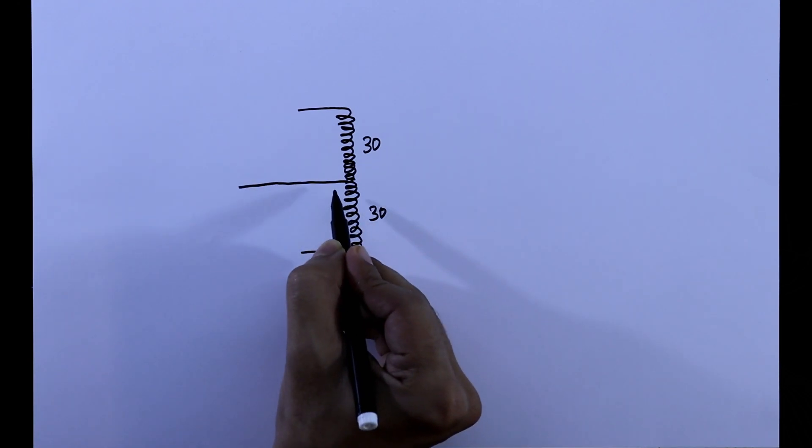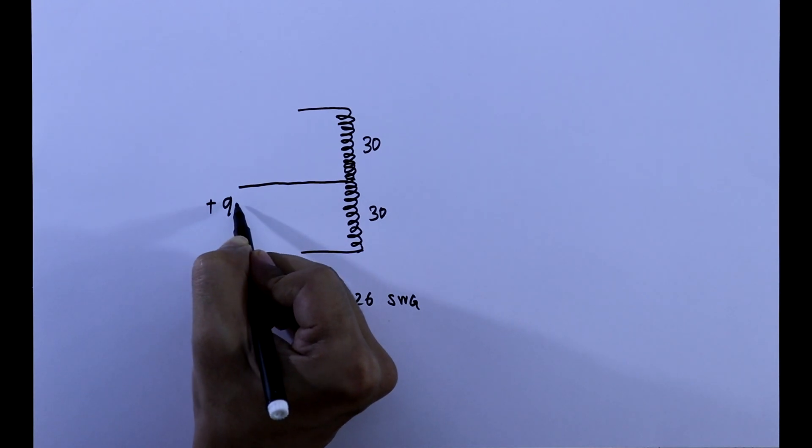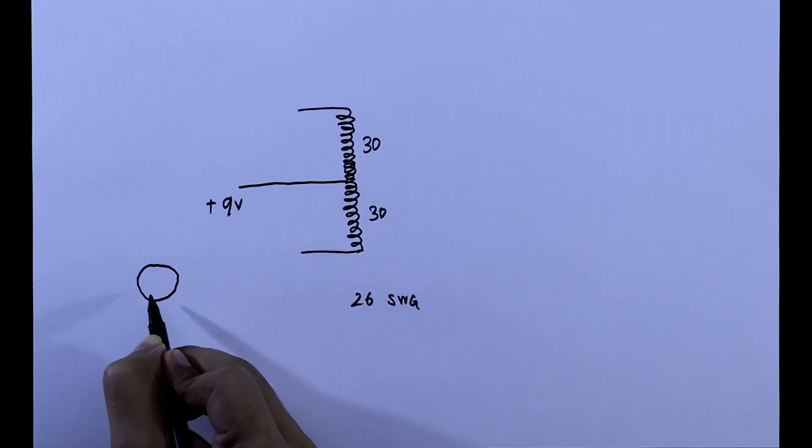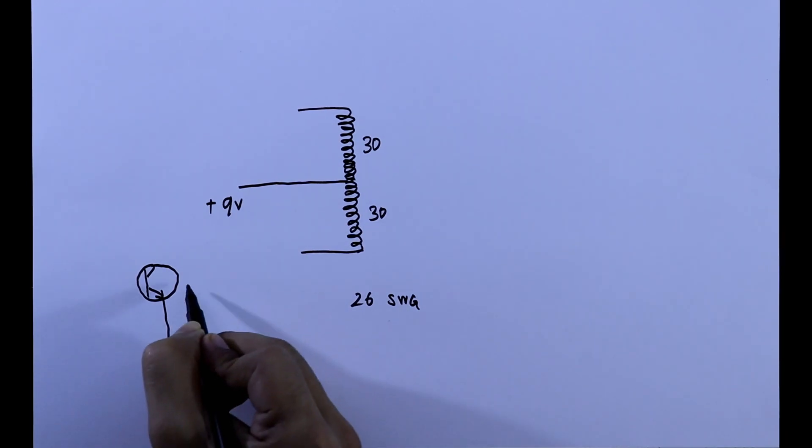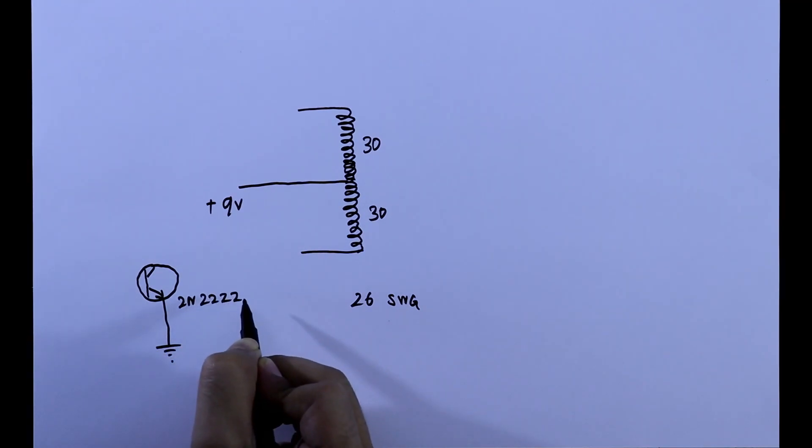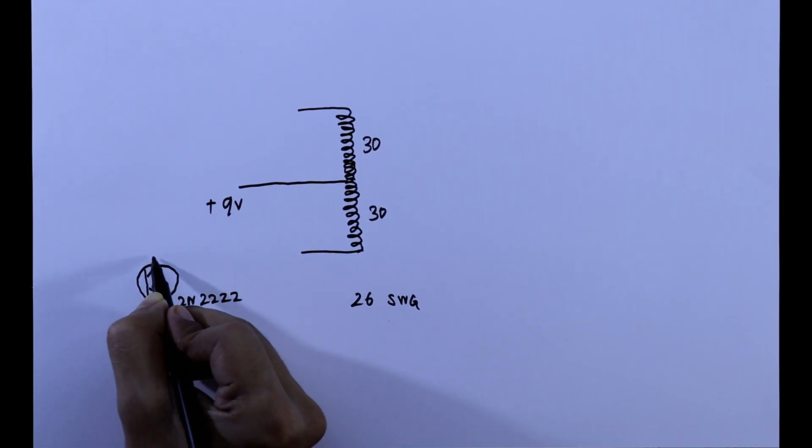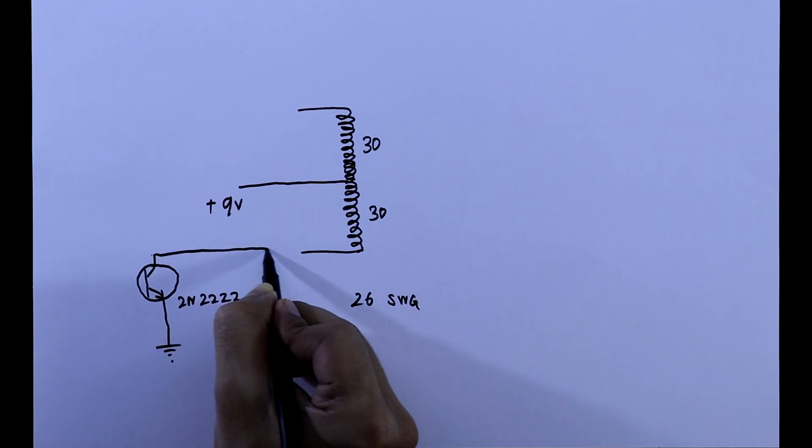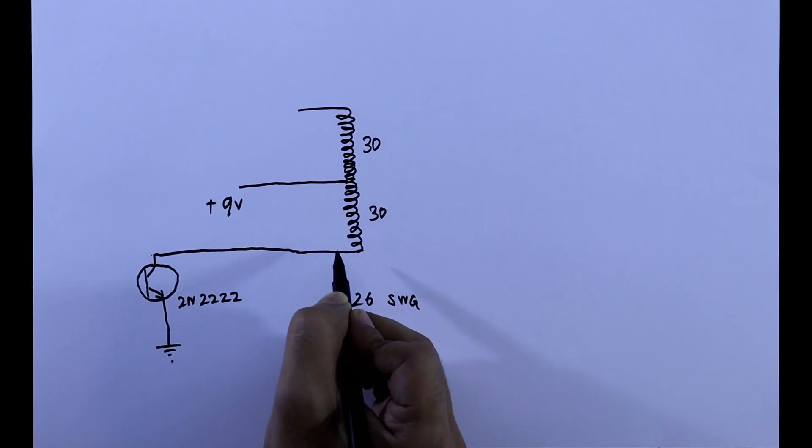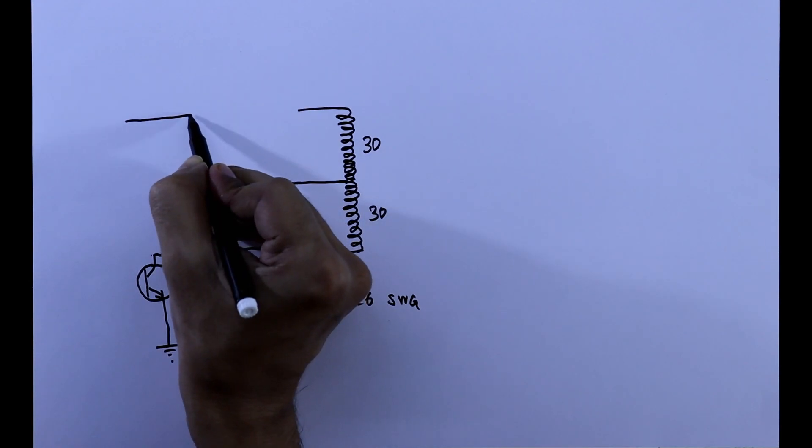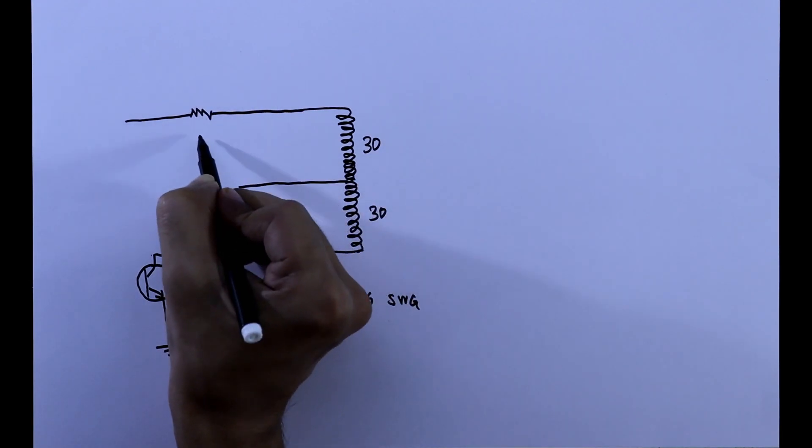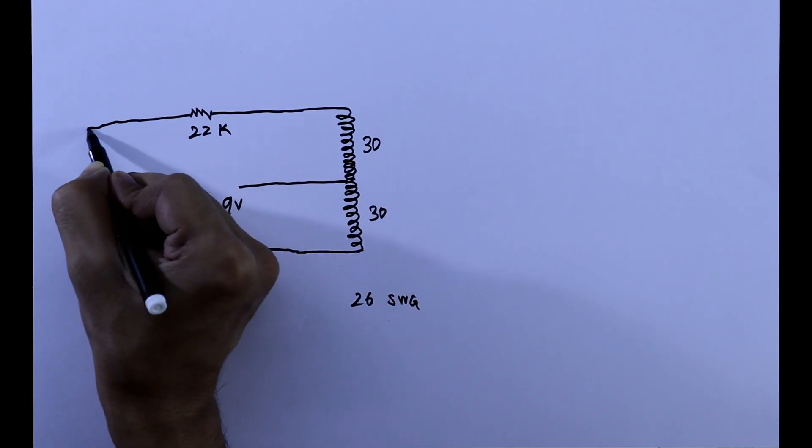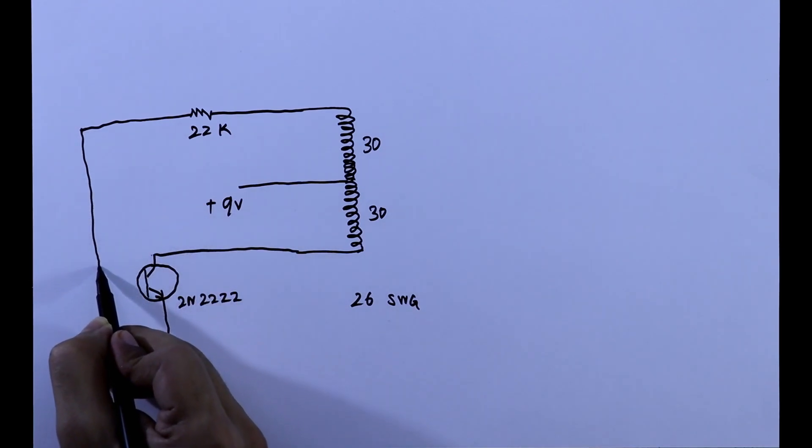In the middle pin of the coil we will connect plus 9V. We need a transistor. The emitter of the transistor will be connected to the ground. It is 2N2222. The collector of the transistor will be connected to one end of the coil. With the other end we have to connect a 22 kilo ohms resistor. And this will be connected to the base of the transistor.